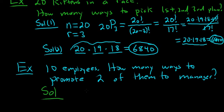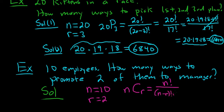Solution. It's a combinations problem. So n is equal to 10. R is equal to 2. And the formula, I'll write it down again. It's n choose r equals n factorial over n minus r factorial r factorial.